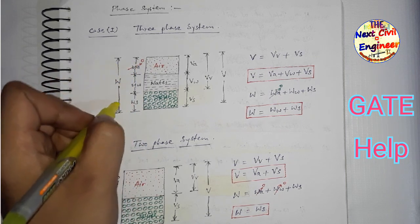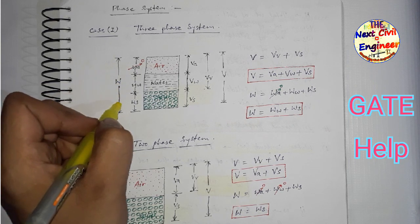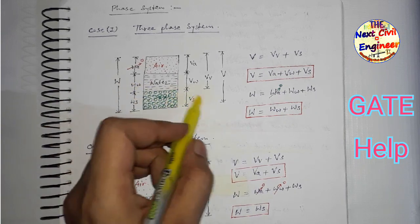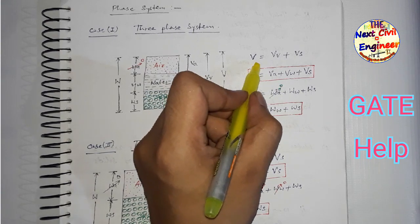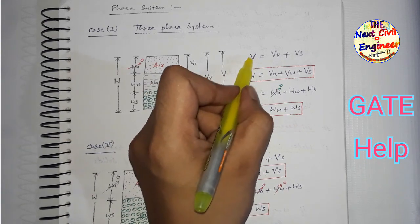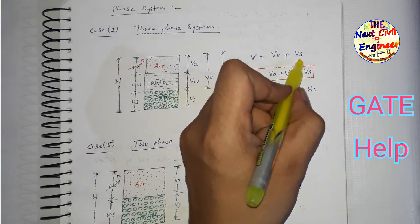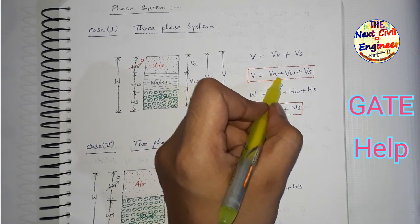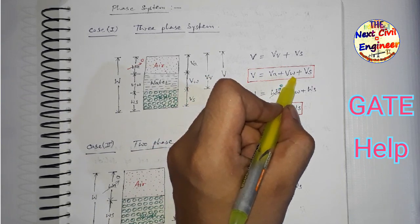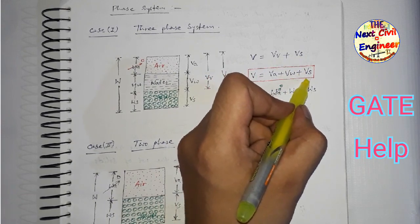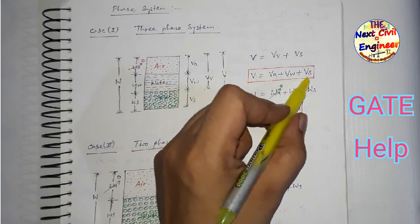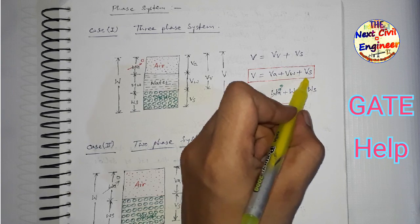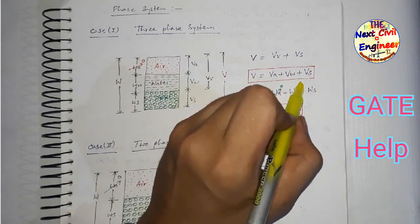Total W यह total weight show कर रहा है। Total volume V equals to volume of voids plus volume of solids। Volume of voids को हम लिख सकते हैं volume of air plus volume of water। तो total volume निकालने के लिए: V = Va + Vw + Vs।